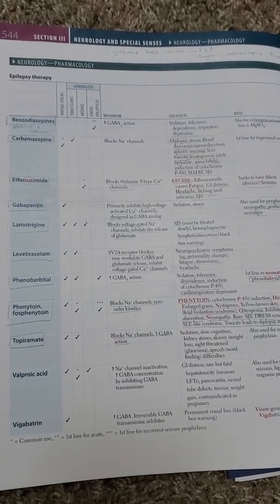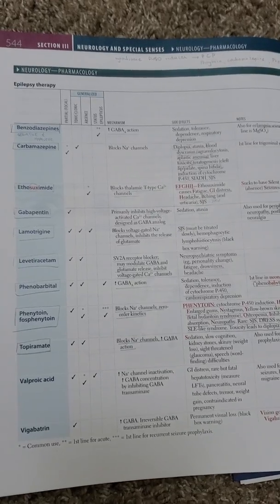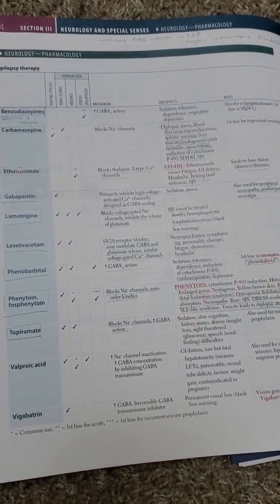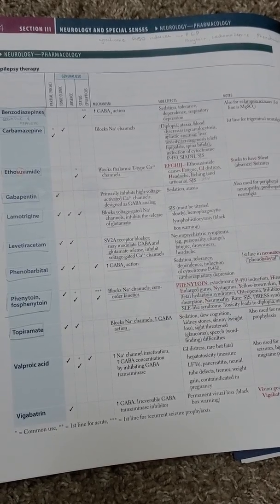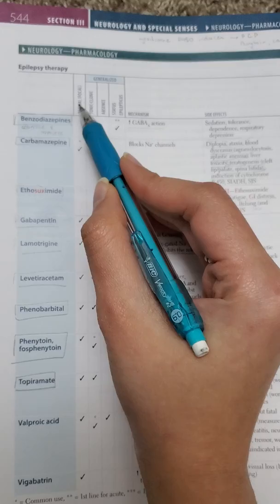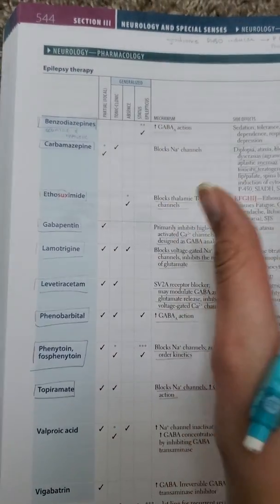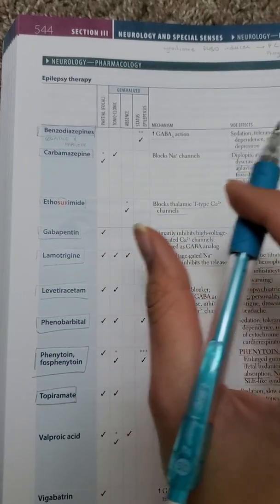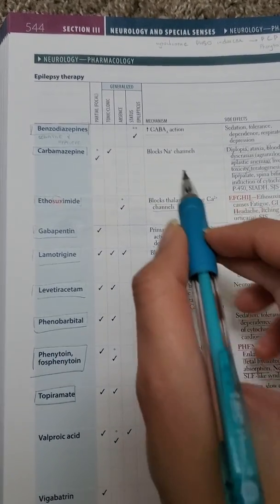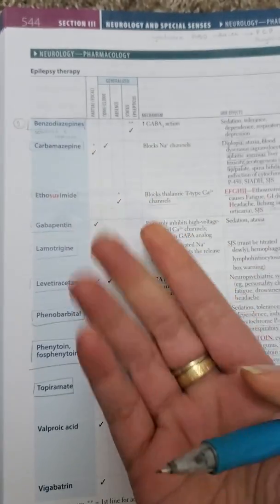We're talking about the drugs used in neurology, specifically neurological disorders, mainly focusing on drugs used for epilepsy. We have generalized epilepsy and partial epilepsy — different types and categories requiring specific drugs. The first category we have is benzos and barbiturates.